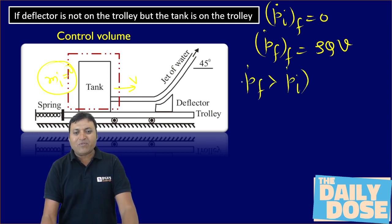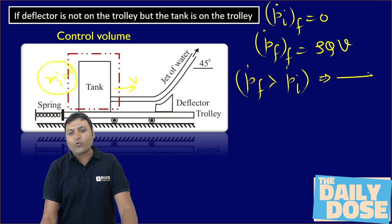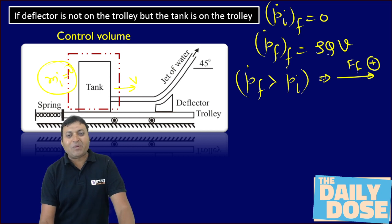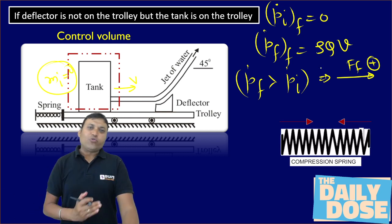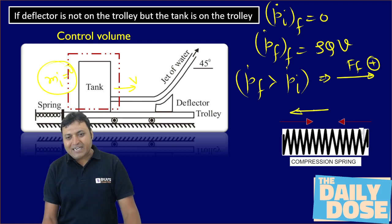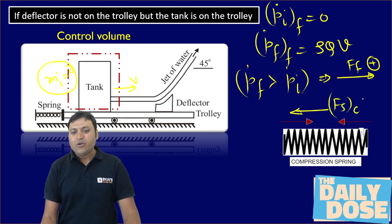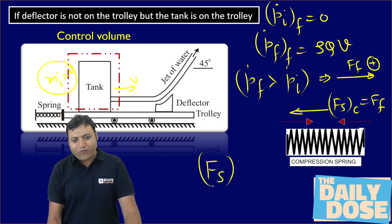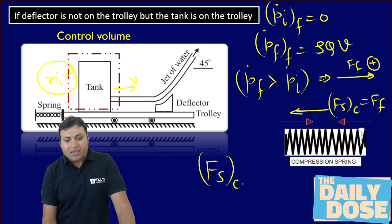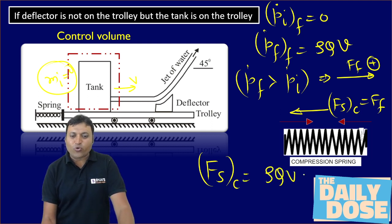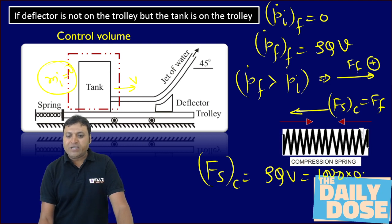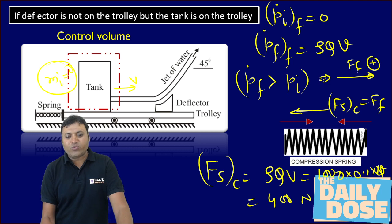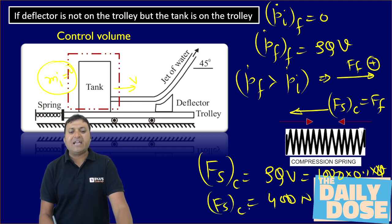Since the final momentum of the fluid is greater than the initial momentum, there is a force on the fluid in the positive x-direction equal to rho × Q × V. According to Newton's third law, an equal and opposite compressive force is exerted on the spring. The spring force is compressive: rho × Q × V = 1000 × 0.1 × 4 = 400 Newton, compressive.